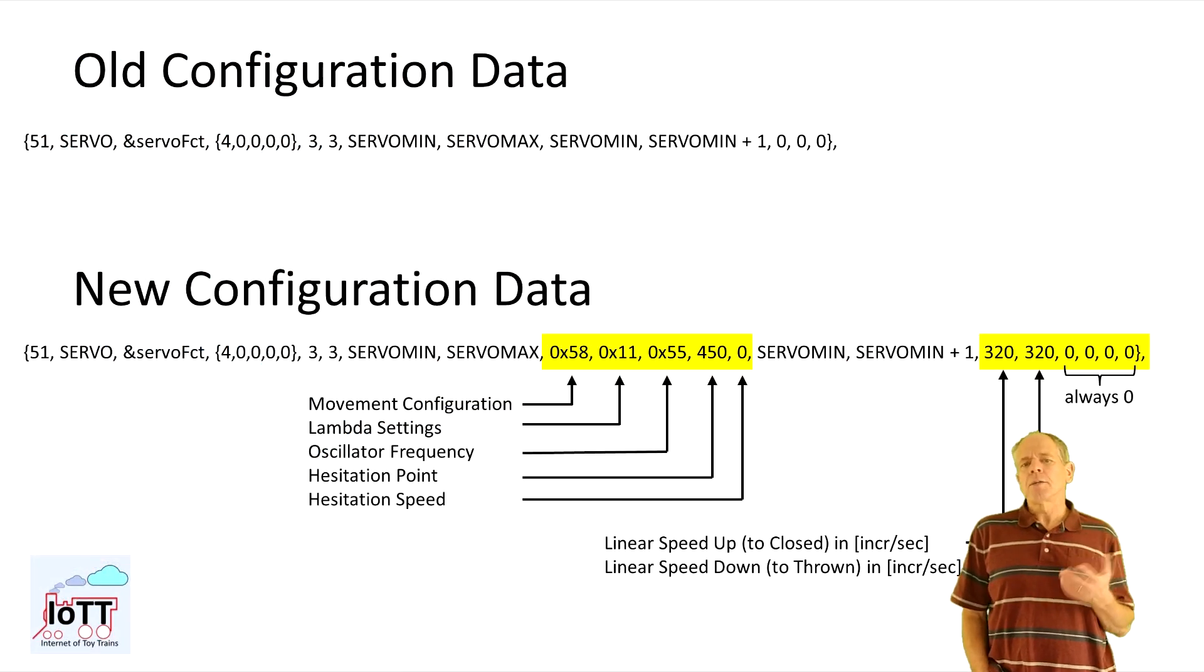Finally, I added some configuration possibilities so that every servo can have its own behavior. Here is a comparison of the configuration data of the original decoder from video number 17 with the new data set used to configure the dynamic movements.